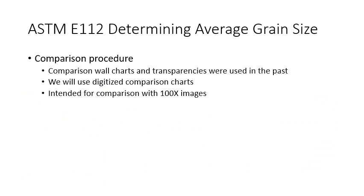In the past, users of ASTM E112 relied heavily on wall charts and transparencies for comparison with their microstructures. We are updating our process to use digitized comparison charts. The original charts were typically intended for comparison with a standard size of image, say 100x. We're going to adapt the process so that we can use images of any magnification and will simply calculate an adjustment factor.